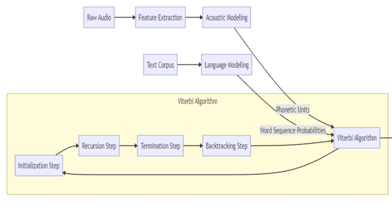To give you an example, let's consider the classic scenario of a robot trying to determine its location — the hidden state — based on sensor readings, which are the observations. The Viterbi algorithm can help the robot find the most likely path of locations that aligns with the sequence of sensor readings. Now, how is the Viterbi algorithm used in Kaldi, you ask?